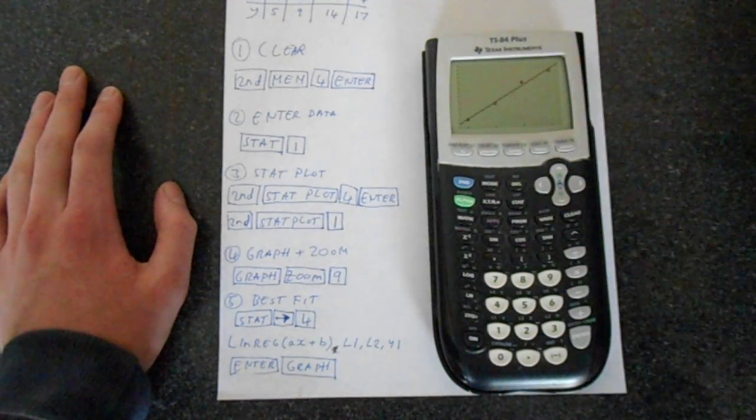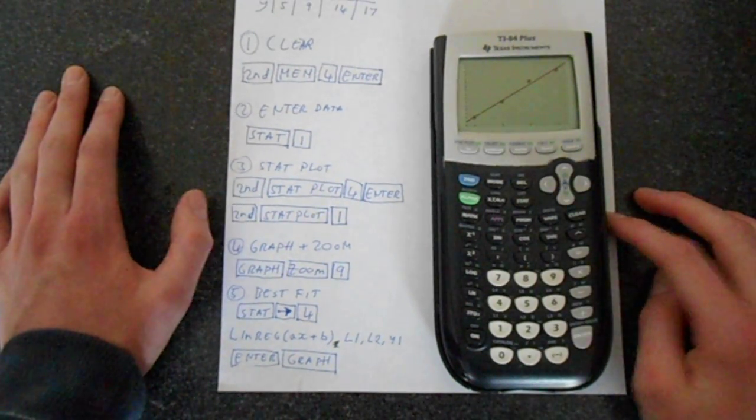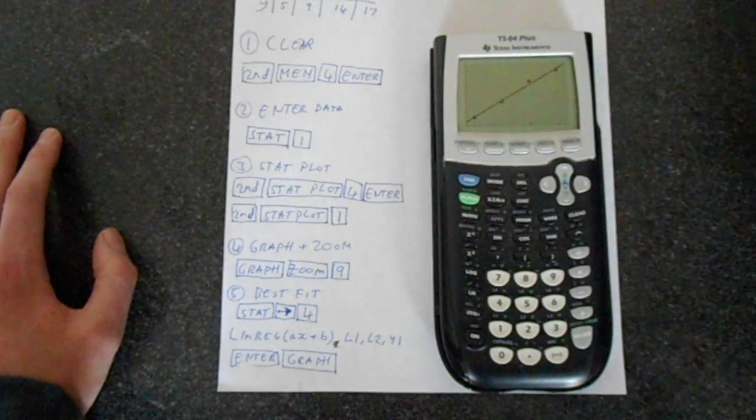So that's how you do linear regression, plot it onto a scatter plot, and plot the actual scatter plot. So hopefully this has been helpful to you, and thank you for watching.